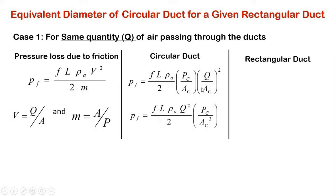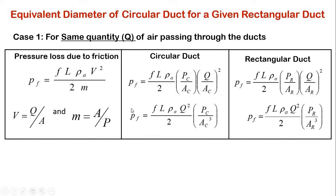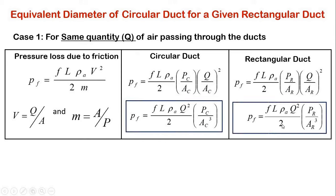Similarly, we can write the corresponding equation for rectangular duct, where the suffix R denotes rectangular duct. Since pressure loss due to friction, friction factor, length of duct, density of air, and quantity of air for circular duct and rectangular duct are all the same, we can equate these two equations. After equating, the common constants cancel out and the remaining terms give us: P_C divided by A_C cubed equals P_R divided by A_R cubed.